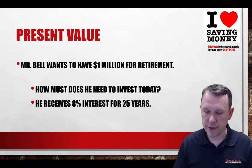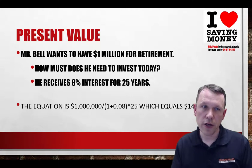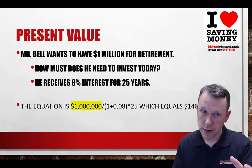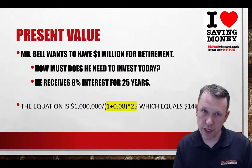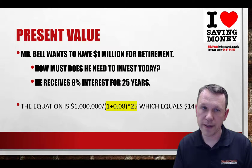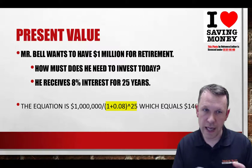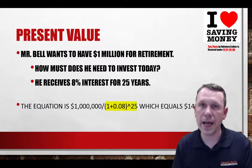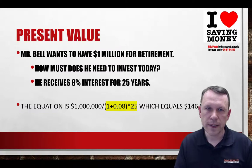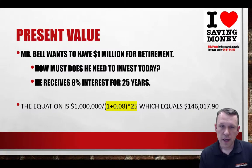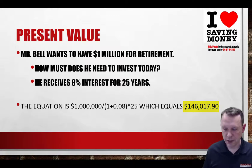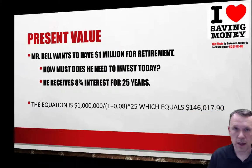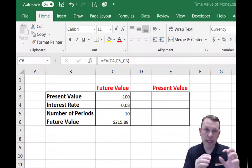Here's the scenario: I want a million dollars when I retire, and I can invest at 8% interest for 25 years. How much do I need to invest today in a lump sum? The calculation takes the future value (the million dollars) and divides it by (1 + 0.08) raised to the 25th power — that's our interest rate and number of compounding periods. The answer is $146,017.90.